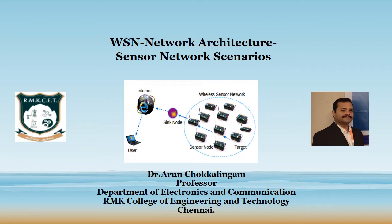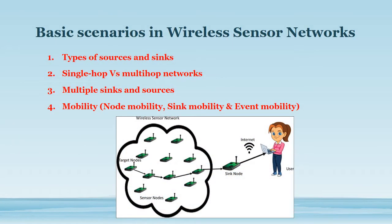Four different scenarios will be discussed in this video: first, types of sources and sinks; second, single hop versus multi-hop network; third, multiple sinks and sources; fourth, mobility — within which three types are available: node mobility, sink mobility, and event mobility.